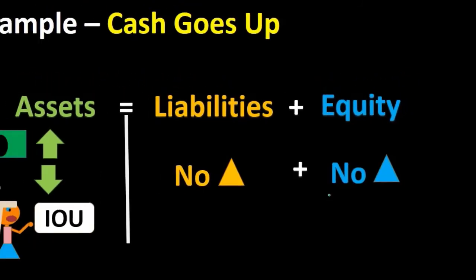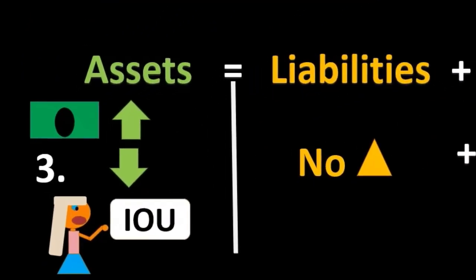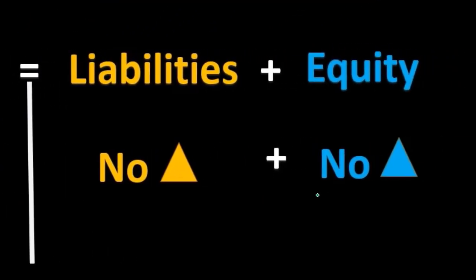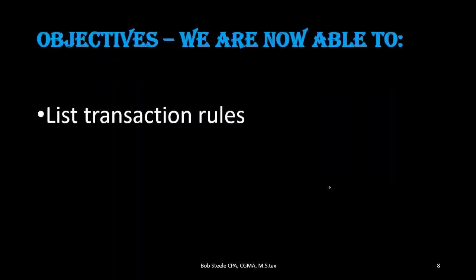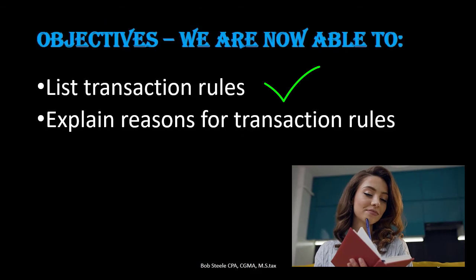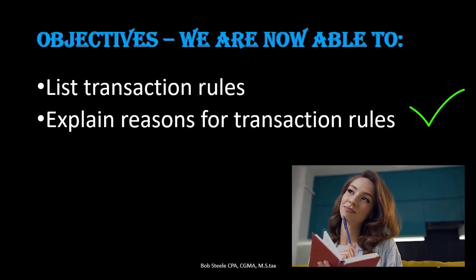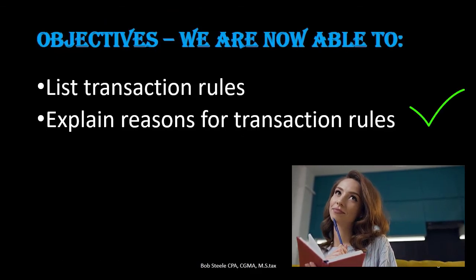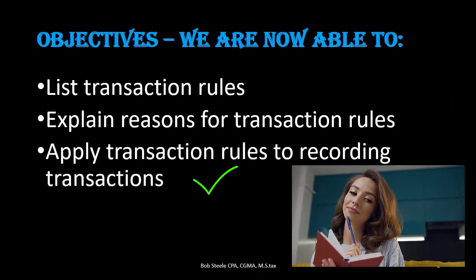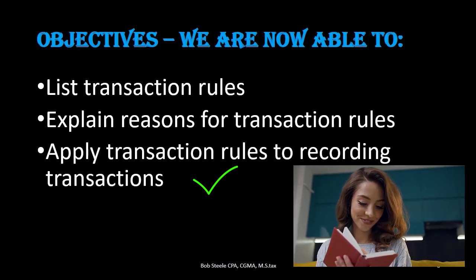This is one reason we will move to debits and credits, because recording transactions in this format can be deceiving when two accounts are on the same side of the accounting equation. With debits and credits, there will be a debit and credit for each transaction, making it a more useful tool for constructing, recording, and posting transactions. We are now able to list the transaction rules, explain reasons for them, and apply transaction rules to recording transactions.